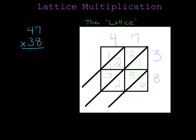So I first have to fill up all of the boxes inside the lattice using multiplication. Now, to get my final answer, I have to add down the diagonals. In this diagonal, there's only one number: six.